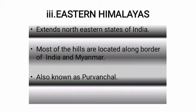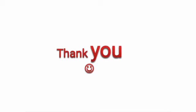Purvanchal Hills. These are the eastern offshoot of the Himalayas, extending in the north-eastern states of India. Most of these hills are located along the border of India and Myanmar, while others are inside India. The hills include Dafla Hills, Abor Hills, Mishmi Hills, Patkai Bum Hills, Naga Hills, Manipur Hills, Mizo Hills, Tripura Hills, Mikir Hills, Garo Hills, Khasi Hills, and Jaintia Hills, which are collectively known as Purvanchal. The rest of the portion will be discussed in the next video.